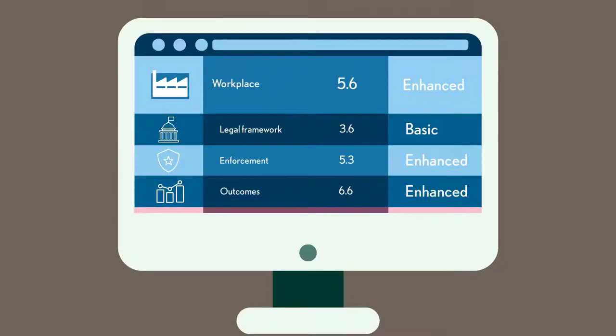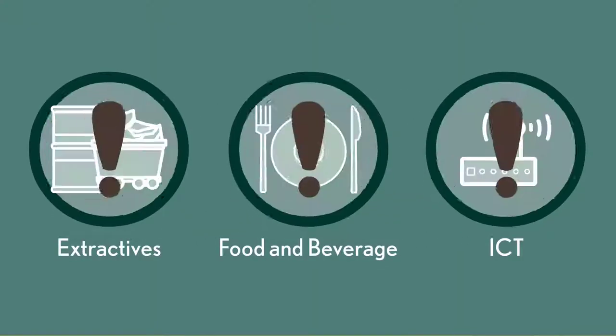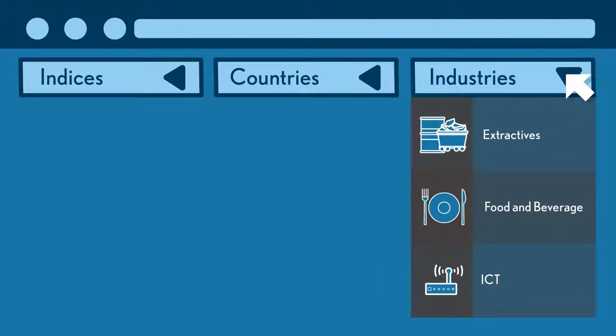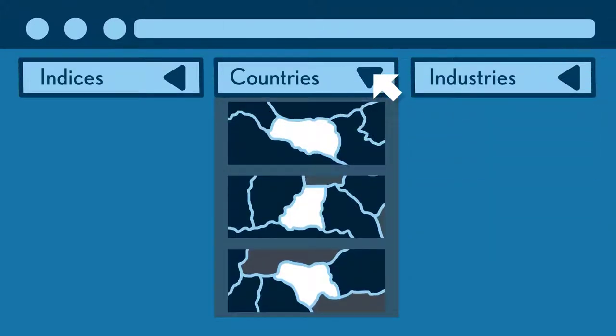So how does it work? In any industry, you start by understanding your industry's known risks, which are also outlined in the Atlas. Then check how vulnerable children are to those risks in a given country.